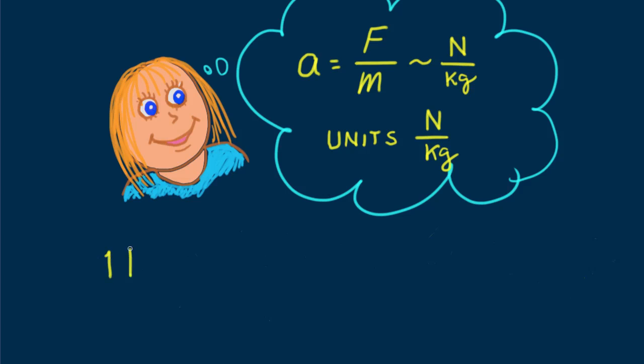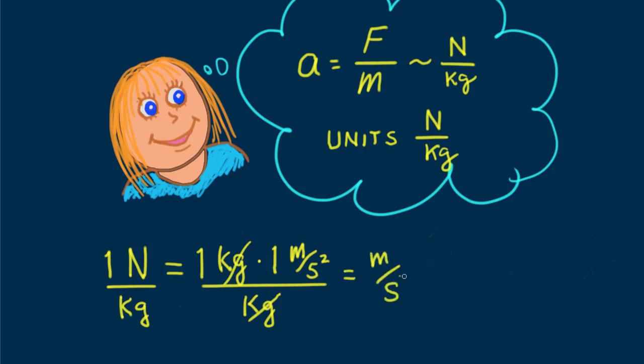Our unit of force is the newton, with one newton defined as the amount of force acting on a one kilogram mass that will produce an acceleration of one meter per second squared. Dividing by kilogram, we can see that units newton per kilogram end up as meters per second squared.